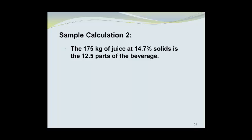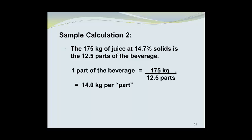The 175 kilograms of the beverage that we have at 14.7% solids accounts for the 12.5 parts of the beverage. So one part of the beverage will be equal to 175 kilograms divided by 12.5 parts. So we know that one part will equal 14.0 kilograms, or 14 kilograms per part. But we've got 2.2 parts of water that we need, so 2.2 parts times 14 kilograms per part will give us 30.8 kilograms of water that we need for the dilution.